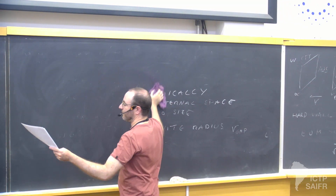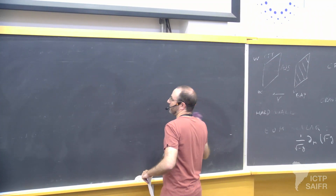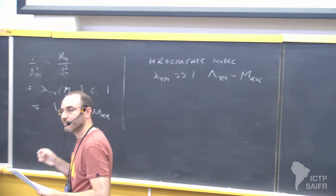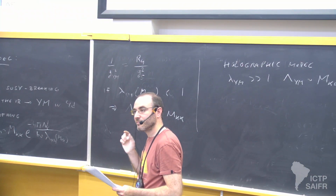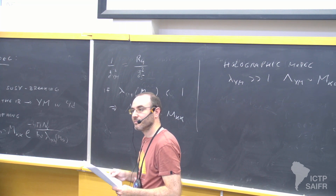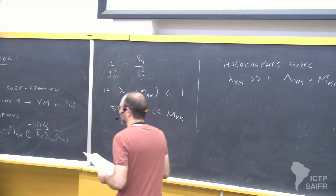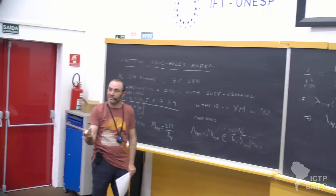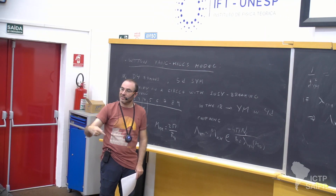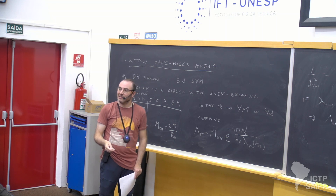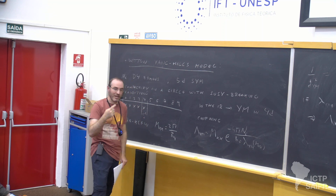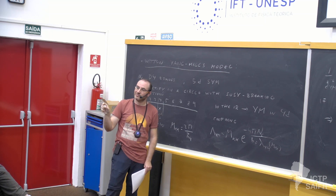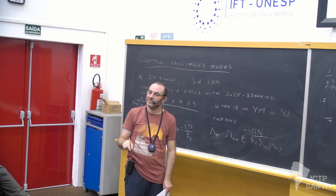The dual geometry to this D4 brane configuration is given by the following metric in the string frame. Question: How does the Kaluza-Klein mass appear in the Lagrangian after doing this Kaluza-Klein compactification? Answer: When you do the Kaluza-Klein compactification, there are modes of the gauge field that don't depend on the internal direction — these are massless in four dimensions. The rest of the fields have dependence on the internal directions and become massive modes in four dimensions with mass proportional to M_KK. So you end up with infinite towers of massive fields in four dimensions.